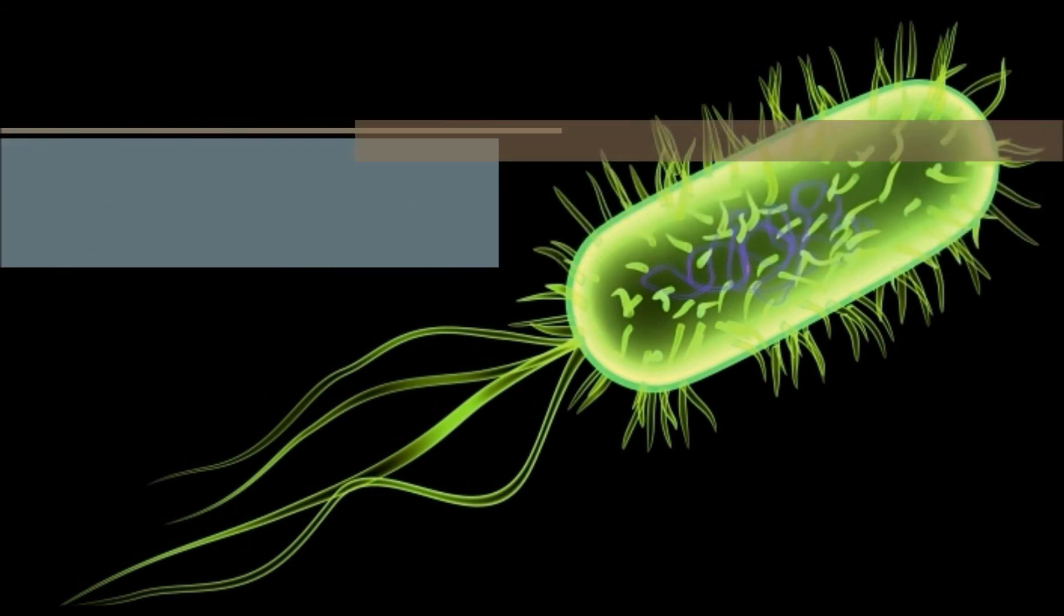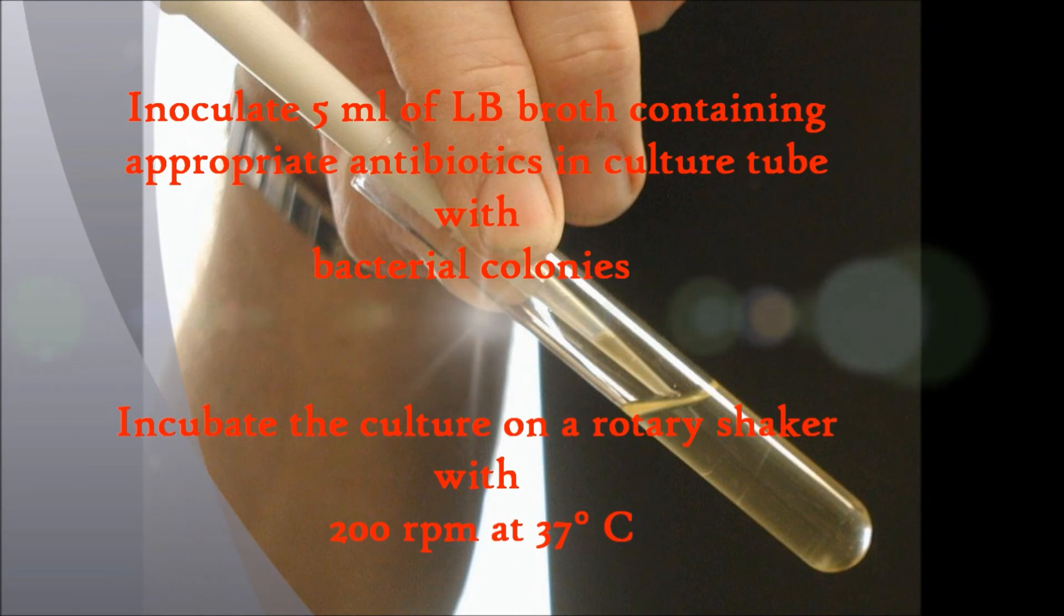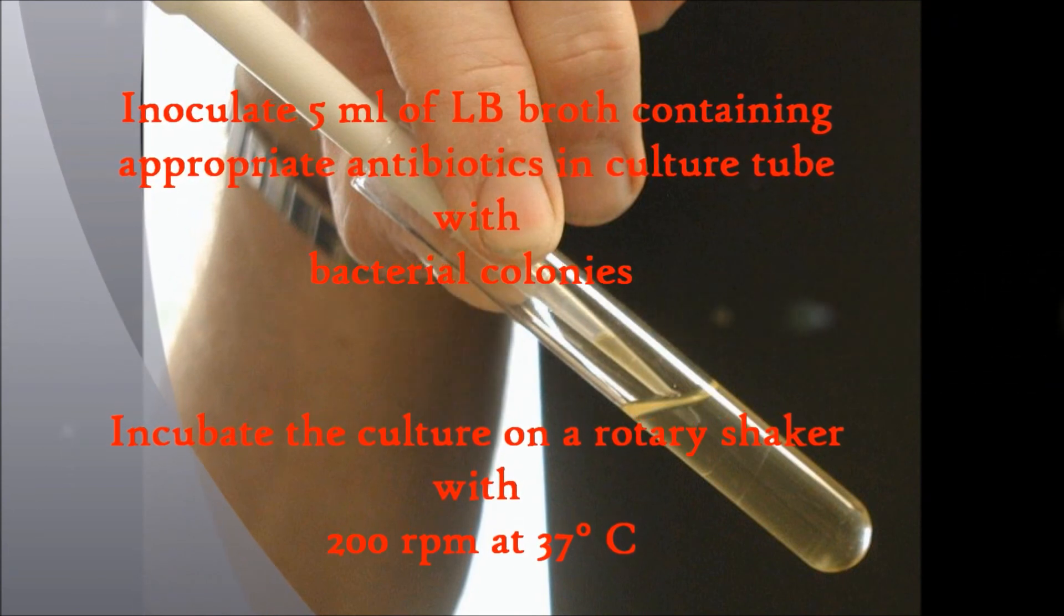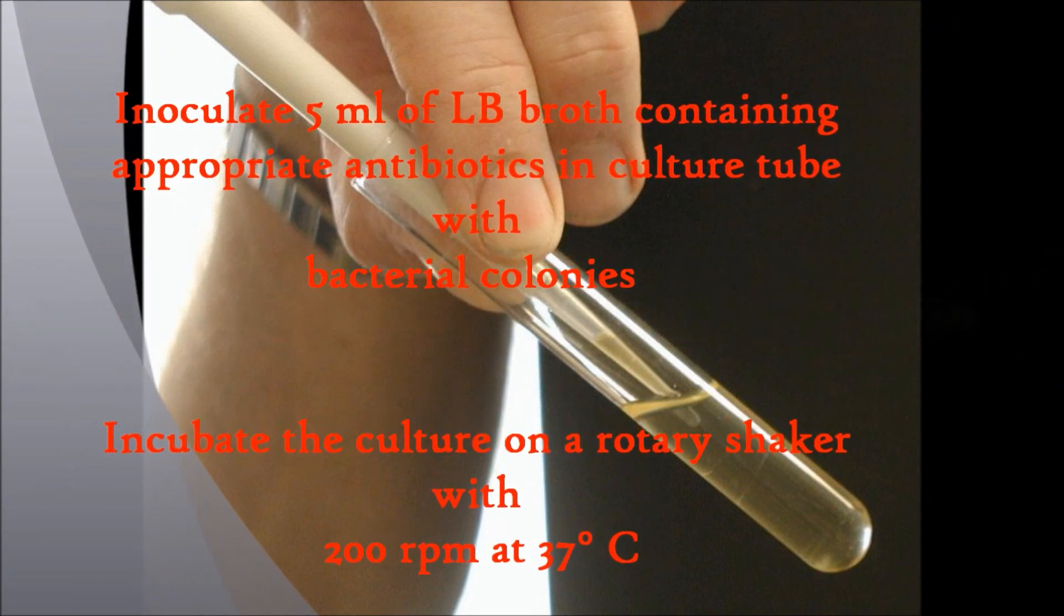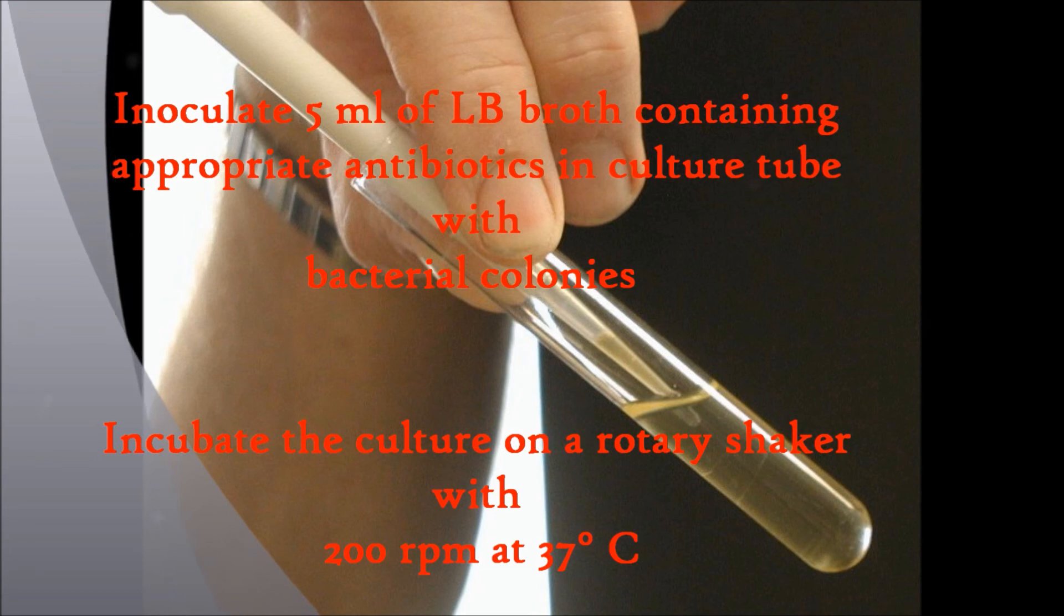Inoculate 5 ml of LB broth containing appropriate antibiotics in culture tube with bacterial colonies. Incubate the culture tube on a rotary shaker at 200 rpm at 37 degrees Celsius overnight.